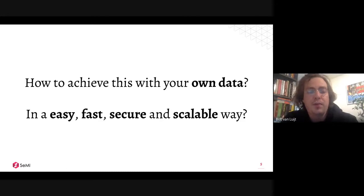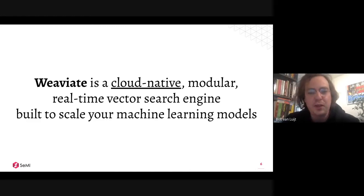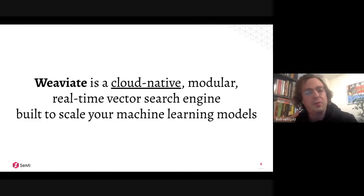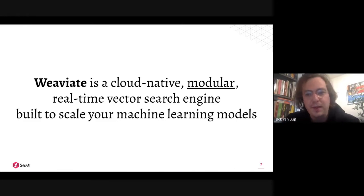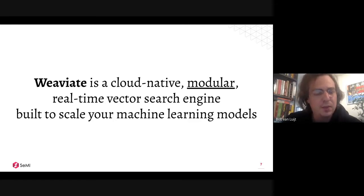Scalable speaks for itself. Weaviate is cloud-native — or as one of my colleagues likes to say, it's Kubernetes-native. That basically means what we need at the lowest level is Kubernetes, and that runs almost everywhere nowadays. One of the most important USPs in Weaviate is the fact that it's modular — that's something we're going to look at today.